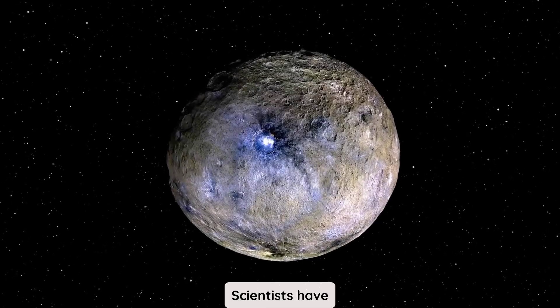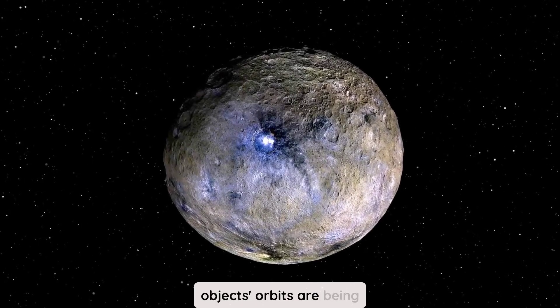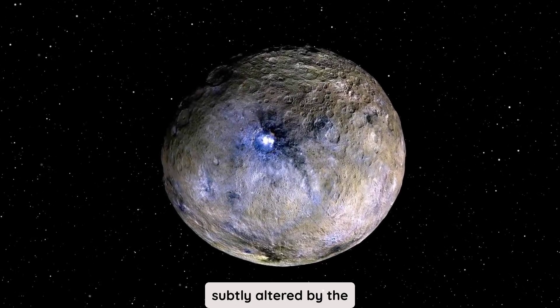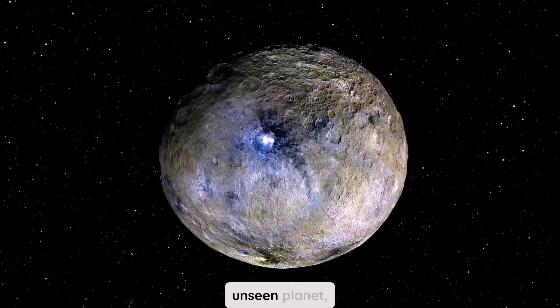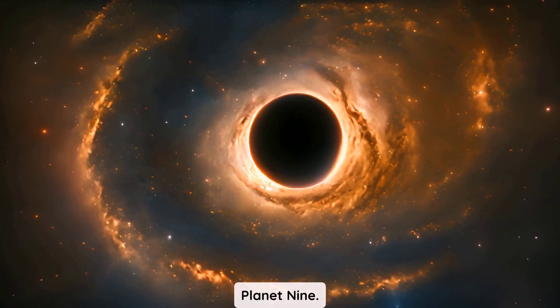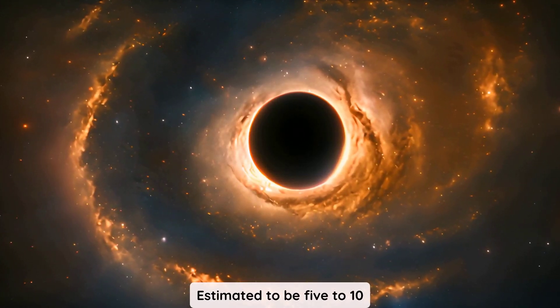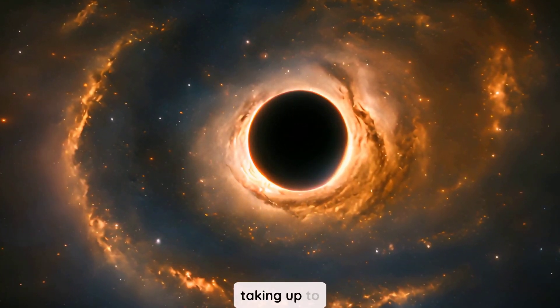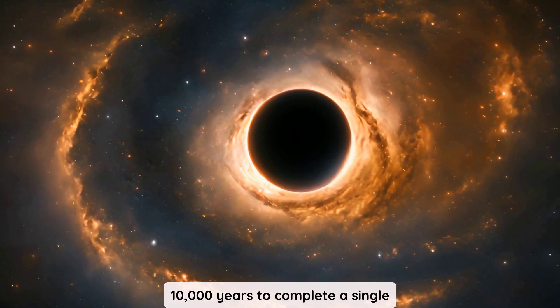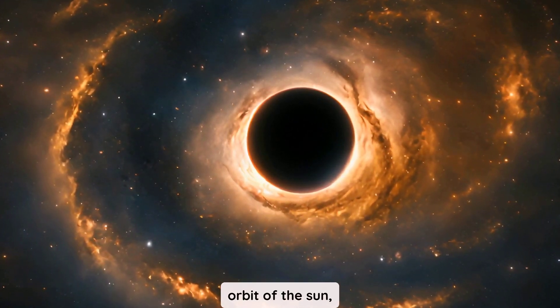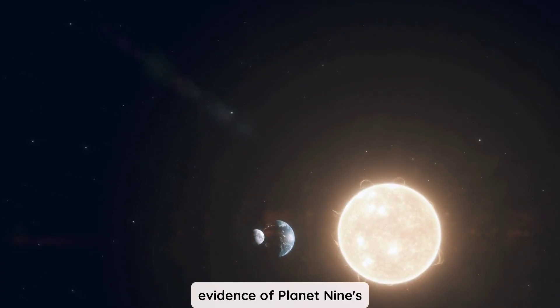Scientists have discovered that over a dozen rocky objects' orbits are being subtly altered by the gravity of a mysterious, unseen planet, Planet 9. Estimated to be 5 to 10 times as massive as Earth and taking up to 10,000 years to complete a single orbit of the Sun, there is no concrete evidence of Planet 9's existence.